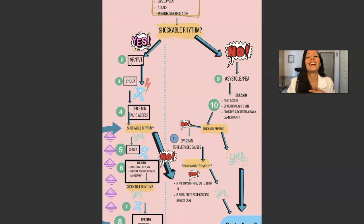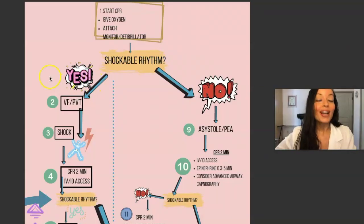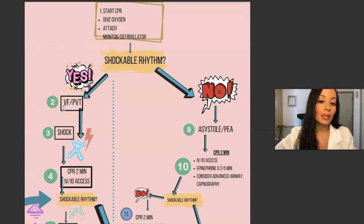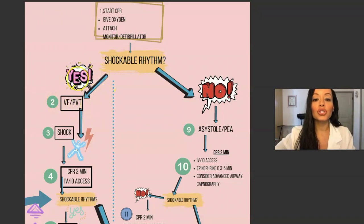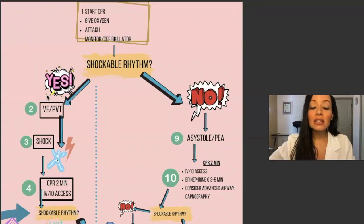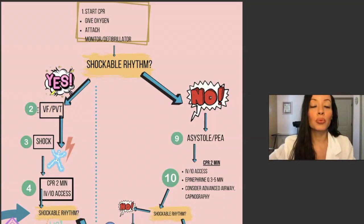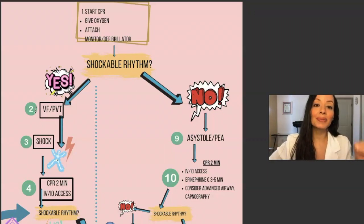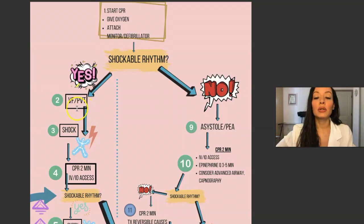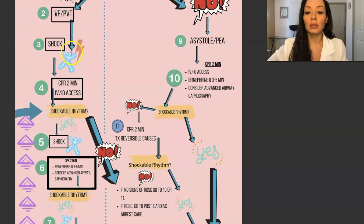So rhythms that are shockable are V-fib — ventricular fibrillation — or pulseless ventricular tachycardia. Those are shockable rhythms. Asystole, even if in real life you've seen asystole be shocked or pulseless electrical activity, for the purposes of the ACLS exam, those are not shockable rhythms. If they're in V-fib or pulseless V-tac, shock. The symbol right there means you need to shock them.